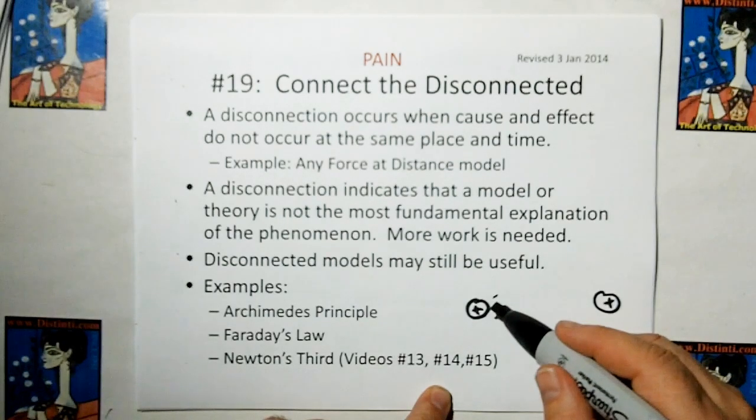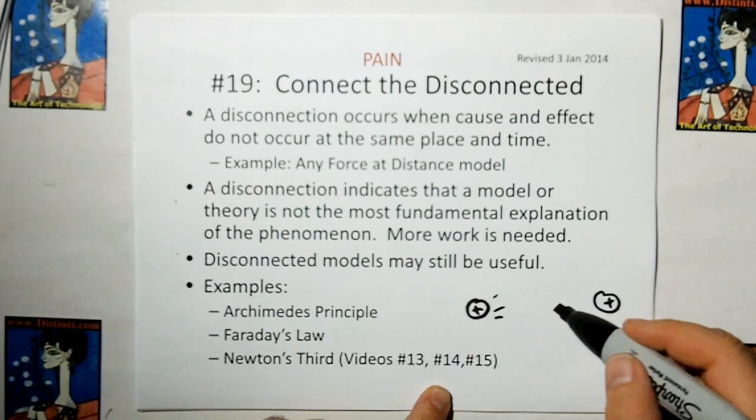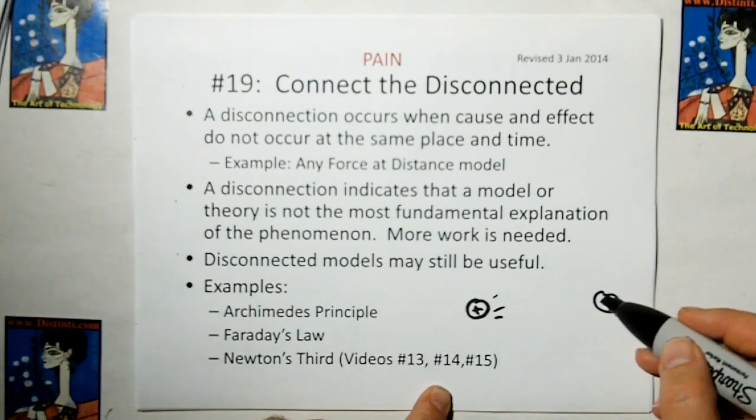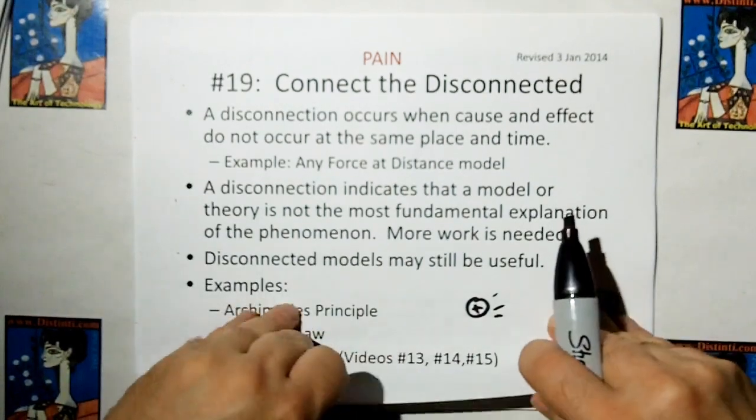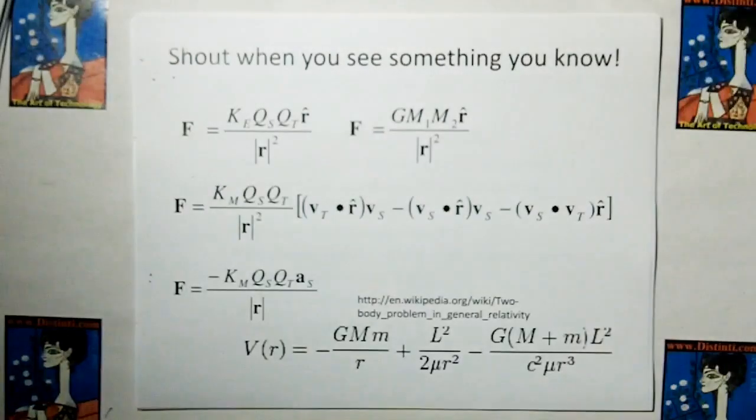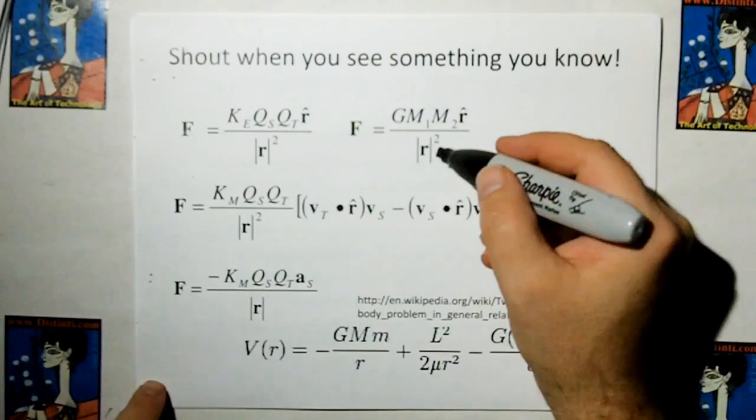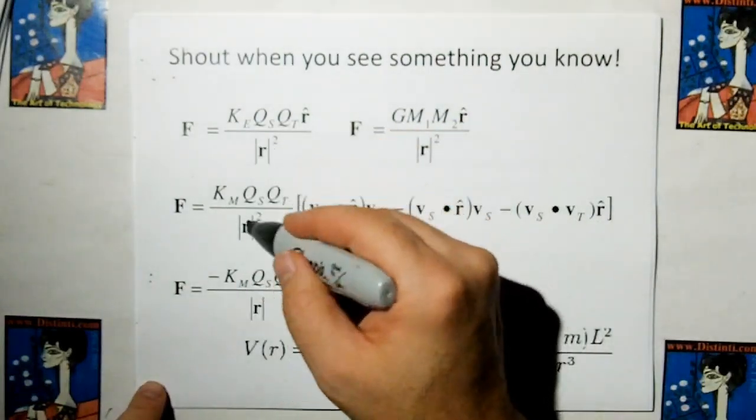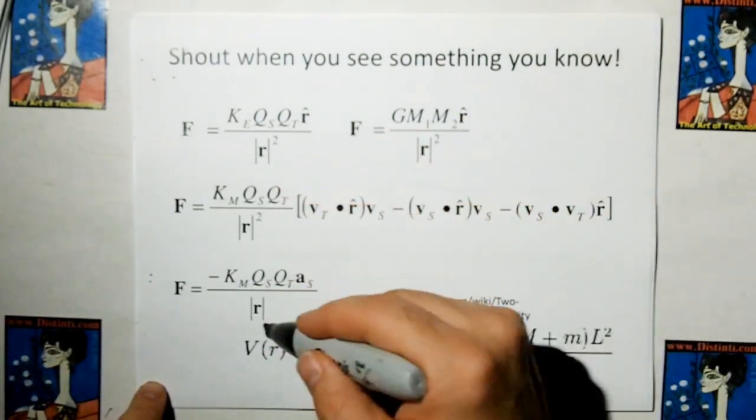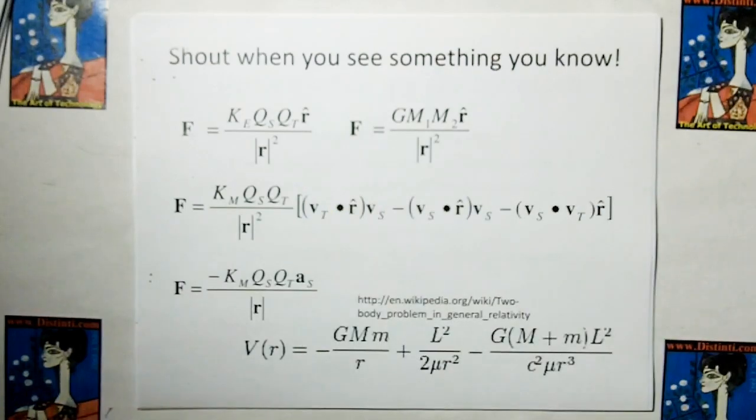And we don't have any model that shows how quickly the electric field gets there. So it's not only disconnected in space, it's disconnected in time. And all of these models are disconnected in both space and time. Essentially, if you have a distance, force at distance, that's what these all are. They're both disconnected in space and time.